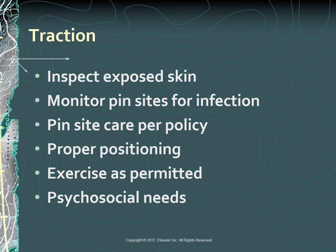External rotation of the affected extremity is a classic assessment finding for a patient with an unrepaired hip fracture. If skin traction is ordered preoperatively, apply traction without attempting to reposition or realign the extremity. Keep the patient in the center of the bed in the supine position to provide adequate countertraction. To offset possible problems associated with prolonged immobility, discuss specific patient activity with the healthcare professional.